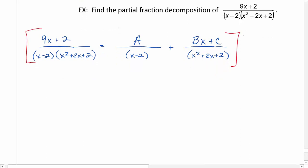Multiplying by our LCD, x minus 2 times x squared plus 2x plus 2, this is going to give us 9x plus 2 equals a times x squared plus 2x plus 2, plus, now be careful, we need to multiply this whole numerator by x minus 2, so be sure to put that bx plus c in parentheses.